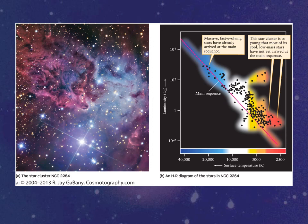Here is an even younger star cluster than the Pleiades: NGC 2264. These stars up here have not yet left the main sequence, so it's a very young star cluster. These stars at the lower end are still in the process of forming and getting onto the main sequence. In fact, some stars up here are still in the process of collapsing down to the main sequence — they haven't evolved off yet. The HR diagram is vital for learning how to find the age of a star cluster.